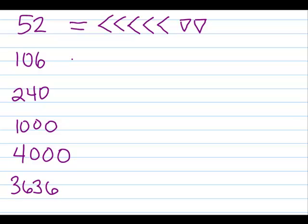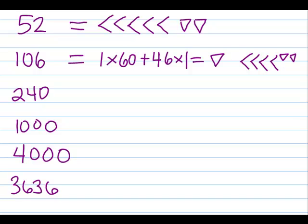For 106, that's larger than 60, so I need to use more than 1 place value. There's only 1 sixty in 106, so I'll have 1 sixty and then 46 ones. So in cuneiform, I would put a 1 in the 60s place, leave a space, and then fit 46: 4 tens and 6 ones.